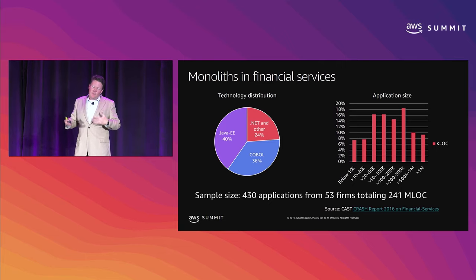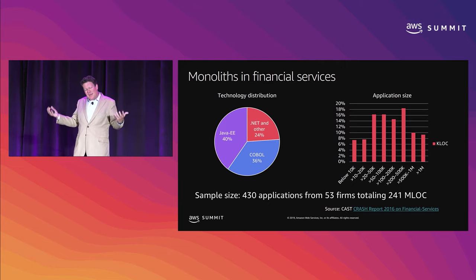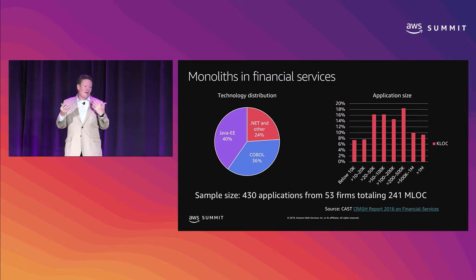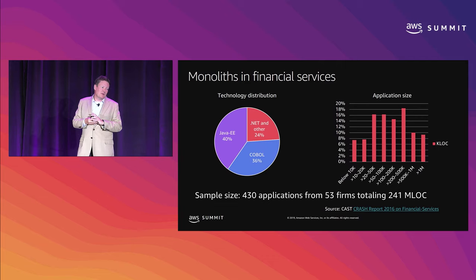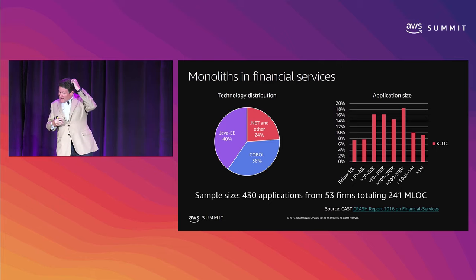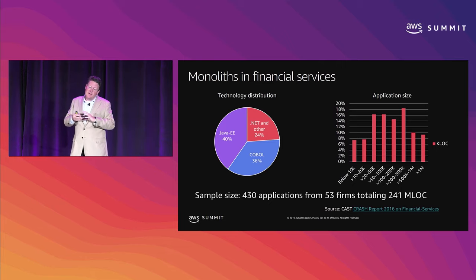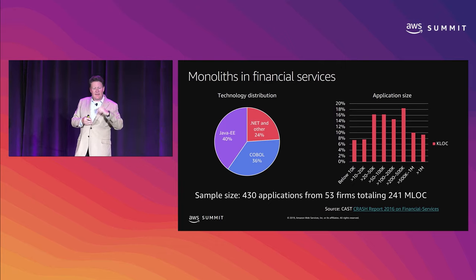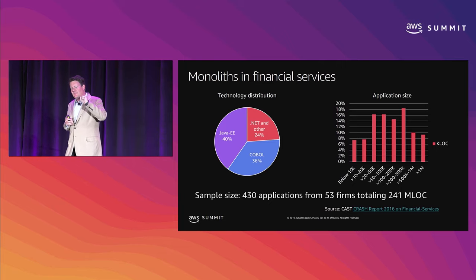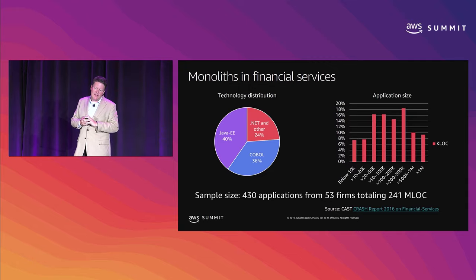And that's when it goes well. When it goes poorly, unwinding it can be a challenge. These tend to be important applications — there's a reason they have hundreds of thousands or even north of a million lines of code. This is something meaningful and important to your business, but there is motivation to start decomposing it: to reorganize teams not around UI, business logic, and DBAs, but around functions so those functions can evolve independently.